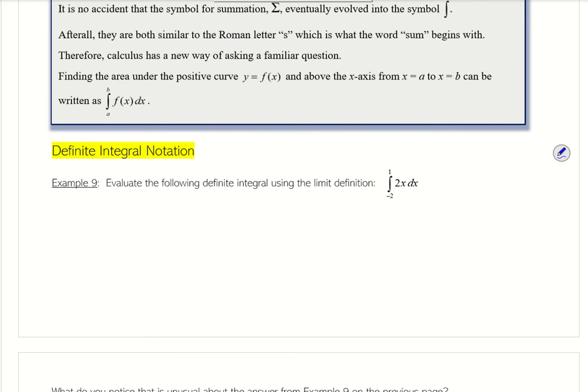Alright, so this is 6.3b, and we're going to continue from the other day. It is no accident that the symbol for summation eventually evolved into the symbol integral. After all, they are both similar to the Roman letter S, which is the word sum begins with. Therefore, calculus has a new way of asking a familiar question: finding the area under the positive curve y equals f of x and above the x-axis from x equals a to b can be written as the integral from a to b of f of x dx.